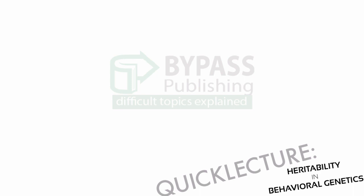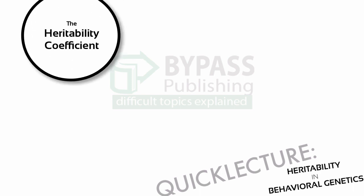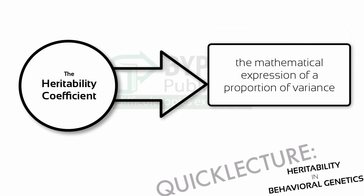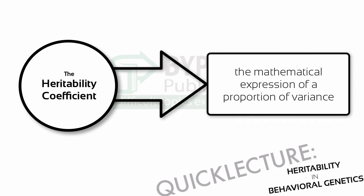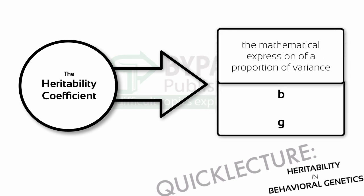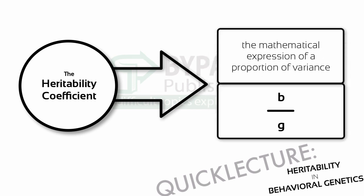Behavioral geneticists use measures of variance to estimate the impact of genetic inheritance. The heritability coefficient is a number that is a mathematical expression of a proportion or fraction of variance. The numerator of the fraction is variance in behavior, and the denominator is variance in genetic makeup. So the heritability coefficient answers the very specific question: how much of the difference that people show in this behavior can be explained by differences in genetics?